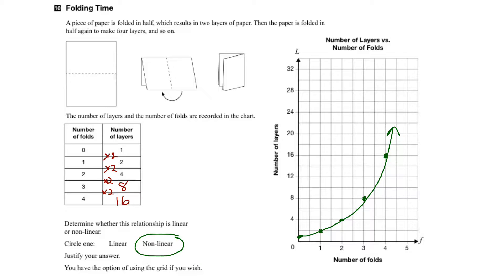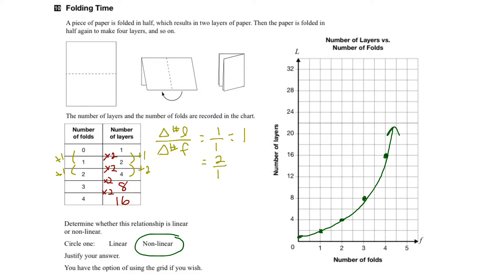But let's confirm it using another method. We know that if the relationship is linear, then its rate of change will be constant. Let's look at the change in the number of layers divided by the change in the number of folds. The change in folds is plus one each time. From zero to one fold, the change in layers is plus one, so the rate of change is one over one, or one. From one to two folds, the change in layers is plus two, so the rate of change is two divided by one, or two.